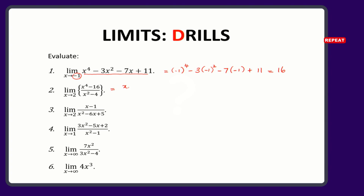This will give you x squared minus 4 multiplied by x squared plus 4, all divided by x squared minus 4. The clue is: very often when these problems are given, by the time you have factorized, something in the denominator should be able to divide something in the numerator or vice versa. In this case, this particular one strikes out. And because it has struck out, we substitute x equals 2: 2 squared plus 4 gives us 8.